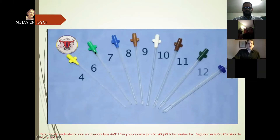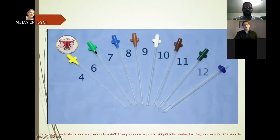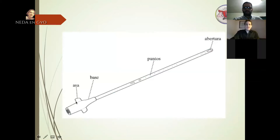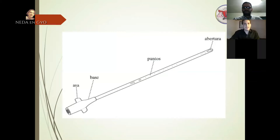Las partes de la cánula son: el asa, la base, los puntos que indican la medida hasta dónde podemos introducir la cánula, y la abertura. El borde cortante está lateralizado y no está en la punta; la punta es roma. Este es uno de los detalles más importantes de esta técnica de aspiración, ya que disminuye considerablemente el riesgo de perforación uterina.